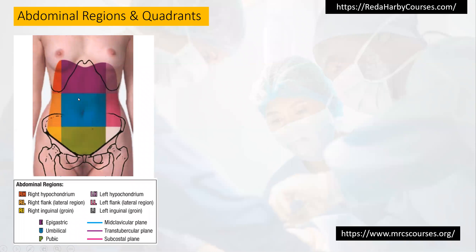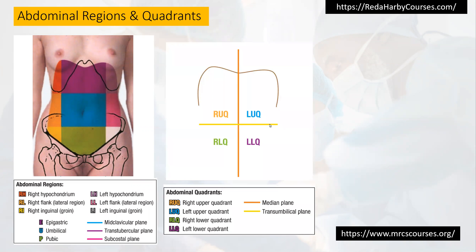If you have pain in a certain area, you have to think about which organ is anatomically there. For the quadrant system, you use the midline — one vertical line — and the trans-umbilical line, making a cross at the umbilicus. So we have right upper quadrant, right lower quadrant, left upper quadrant, and left lower quadrant.